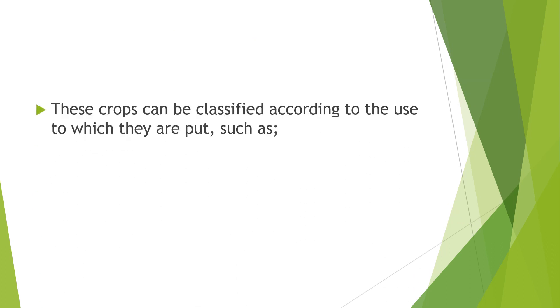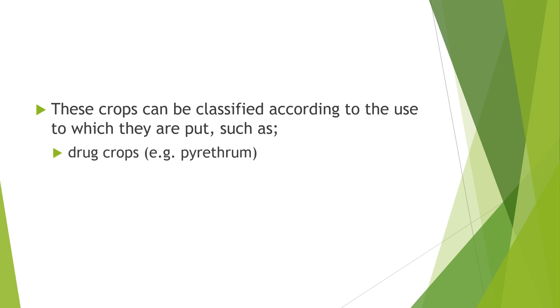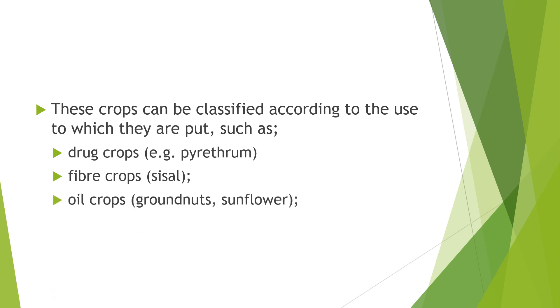These crops can be classified according to the use to which they are put: drug crops (e.g. pyrethrum), fiber crops (e.g. sisal), oil crops (e.g. groundnuts, sunflower), and food crops (e.g. maize).